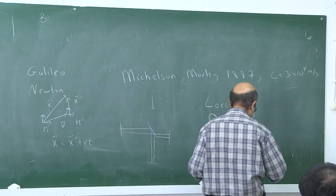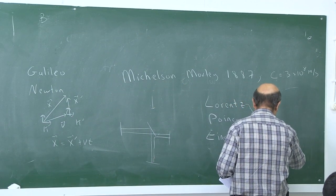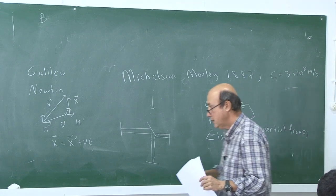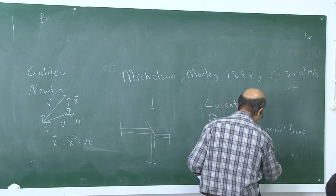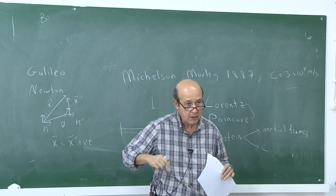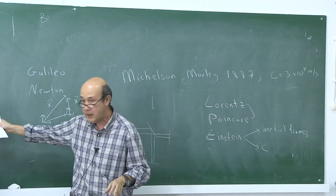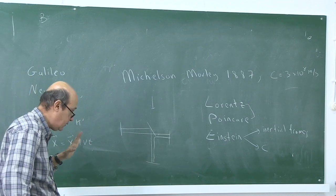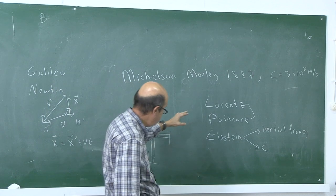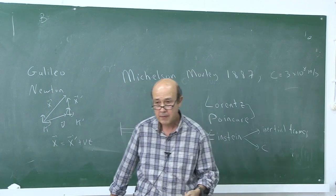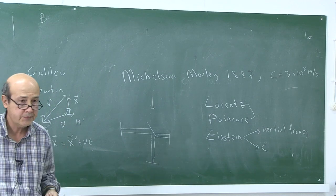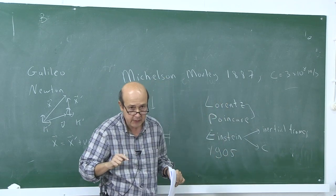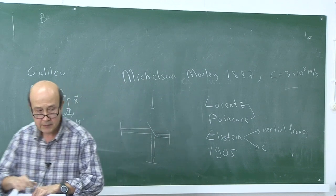One postulate: in all inertial frames, the laws of physics should be the same. The other postulate: c is constant in all frames. His theory got rid of all ether and says physics rules are the same in all frames and the speed of light is the same — c everywhere. He used the work of Lorentz and Poincaré and published the result in 1905, when he was 26 years old. That was the special theory of relativity.